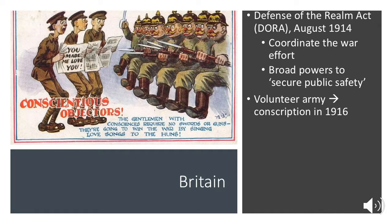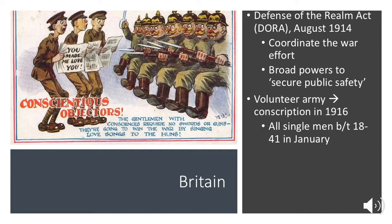They introduced something called British Summertime, which changed the clocks to increase the number of work hours with sunlight and helped increase productivity. For the first two years of the war, Britain fought with a volunteer army, but in January 1916 they introduced conscription. The combined losses at Mons, Ypres, and Gallipoli meant that the volunteer army of three million men had been greatly reduced, and they needed to keep the army stocked with men. Initially, they started with single men between the ages of 18 and 41 in January, but that was not enough.